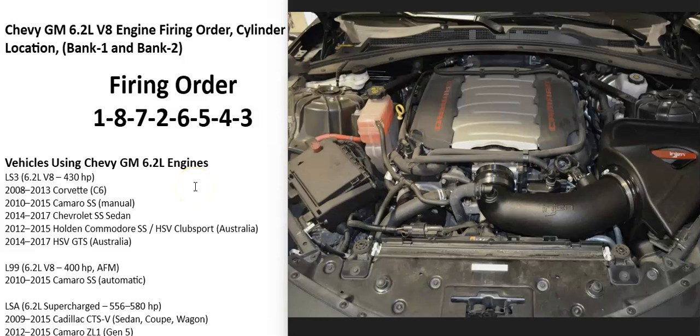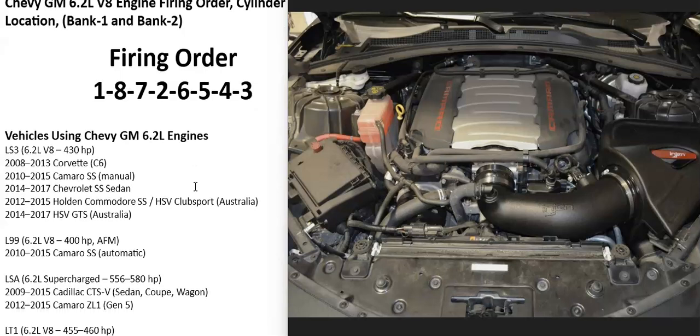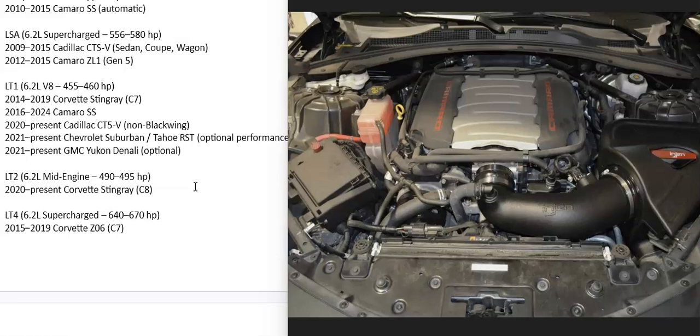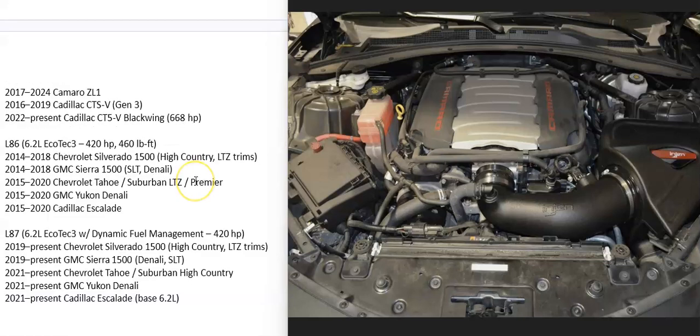And the 6.2 liter was used inside of many different vehicles. It's been used inside the Camaro, the Corvette, many of the trucks like the Suburban, and many more. But the firing order, the cylinder location, and bank one or bank two is going to be same across all of these.